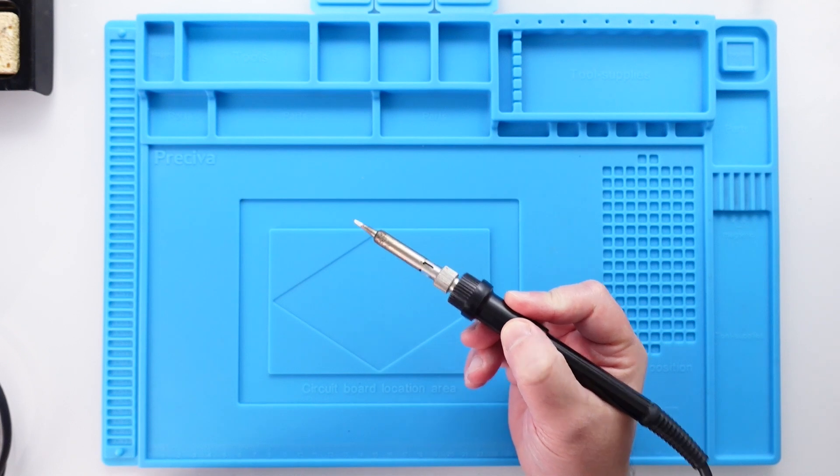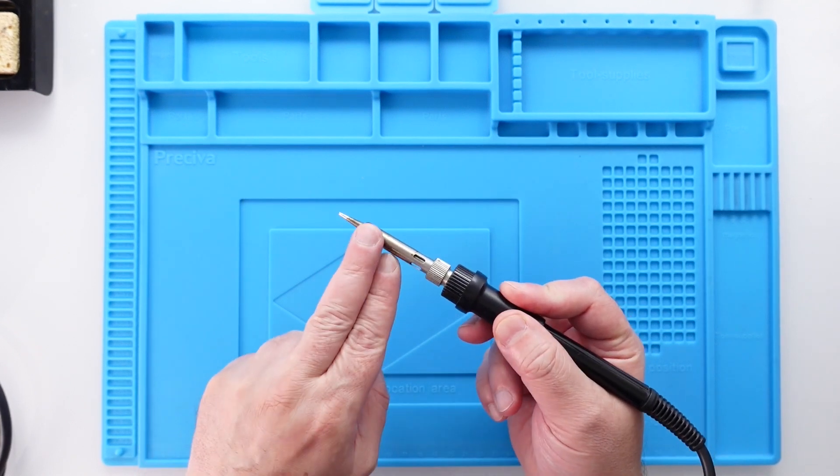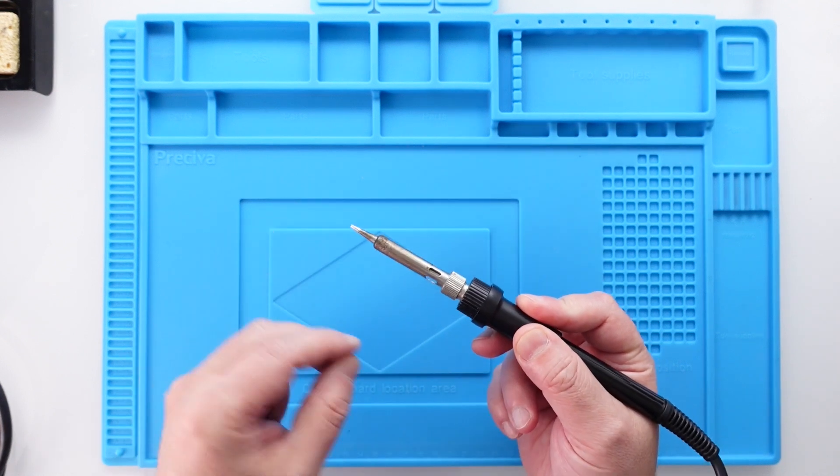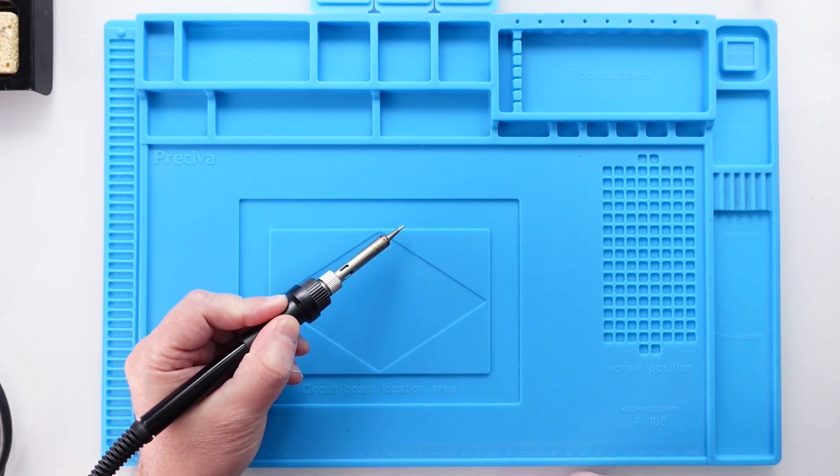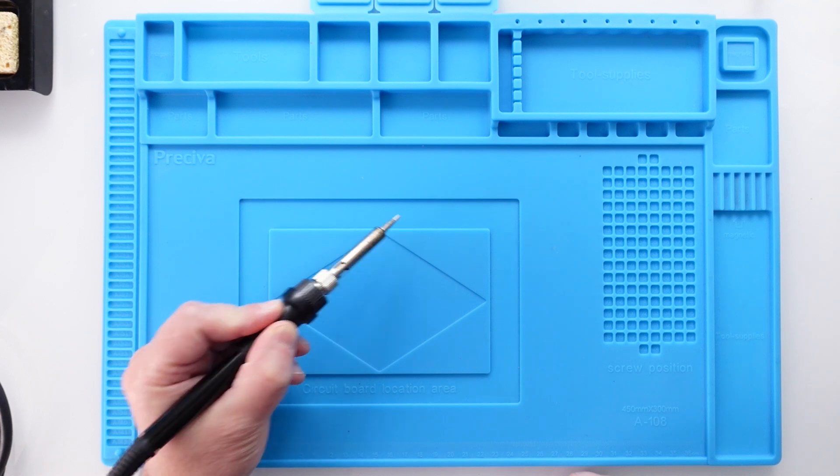When holding the soldering iron, make sure you do it in a way similar to this. Never ever touch the metal part because it's extremely hot and you're going to burn yourself. When soldering, use it like a pencil so you can easily control the time you have the tip on top of the material.